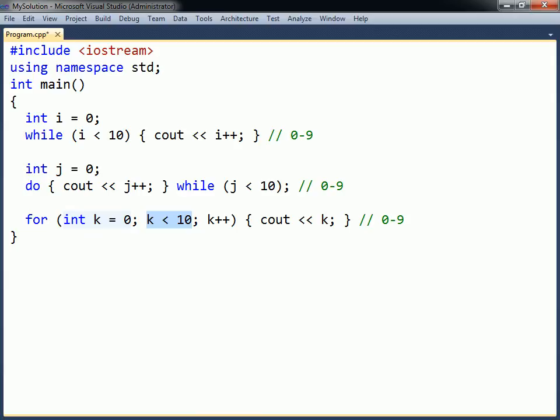The second parameter holds the condition for the loop and is checked before each iteration. The third parameter contains the increment of the counter and is executed at the end of each iteration.